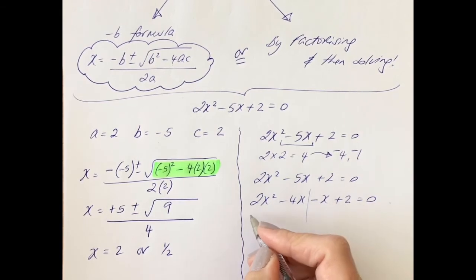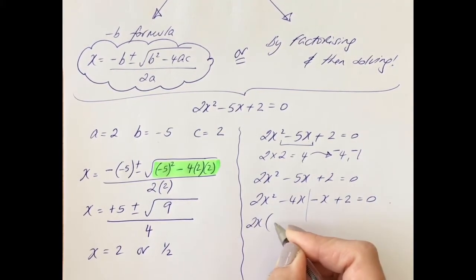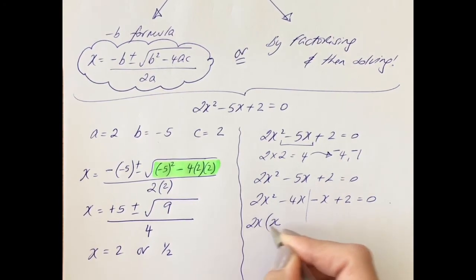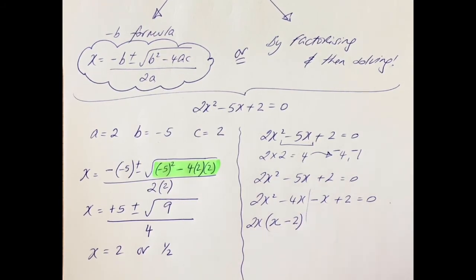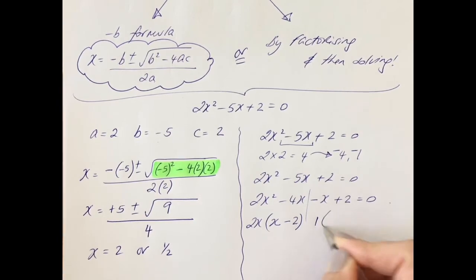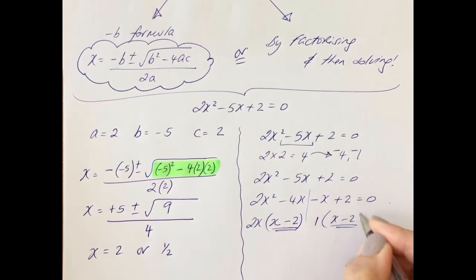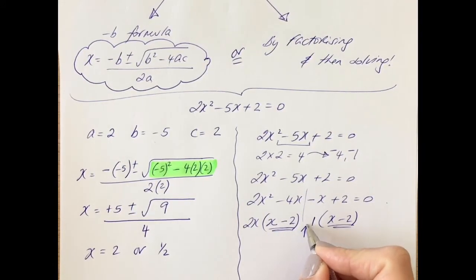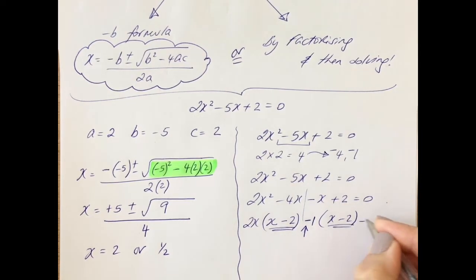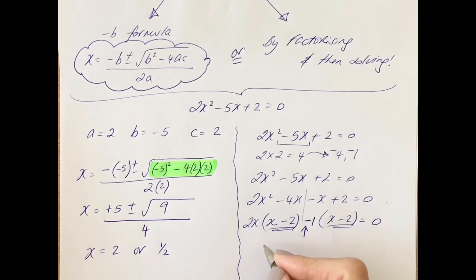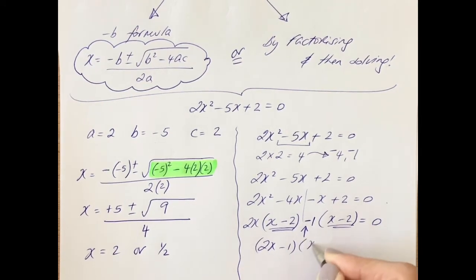Now I'll split and factorize. Common to 2x squared and 4x is 2x. I would need to multiply by an x to get 2x squared back, and I'd need to multiply by a minus 2 so that 2x by minus 2 is minus 4x. Looking at this side, minus x plus 2 — nothing really common there, so I'll pull out a 1. You always know these brackets should be the same, so I'm going to fill that in straight away and then check what that sign needs to be. In order to make a minus x, that would have to be a minus 1. And double-check the last term: minus 1 times minus 2 is plus 2 — that's correct.